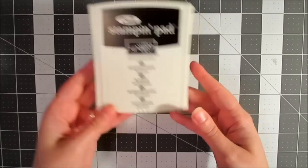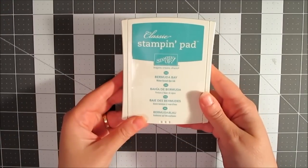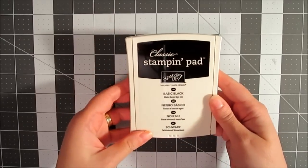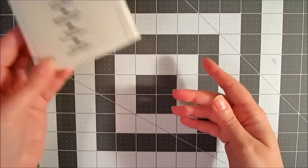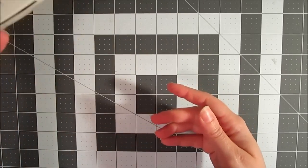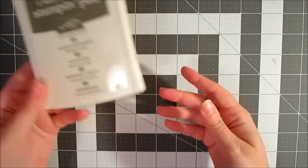Always could use some Whisper White, Bermuda Bay, Basic Black - everybody needs that in their collection - Chocolate Chip, Always Artichoke, and Cherry Cobbler is on the way. I actually got a shipping notice today. It was on back order. I'm so excited, I can't wait for it to get here.